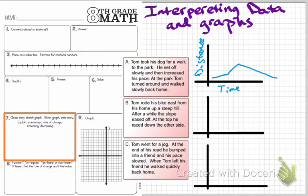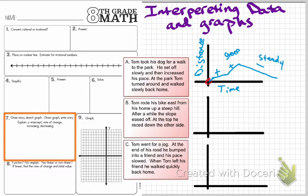A couple of things to note here. We want to describe our y-intercept, which is where the graph starts — he's starting at his home in this graph. Then we want to describe the rate of change. In this case it's not a constant rate of change. We might describe a positive rate of change, another positive rate of change, and then a negative rate of change — using words like steep or steady. We don't need to come up with a specific value since it changes over time; we simply describe what that rate of change is doing.